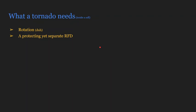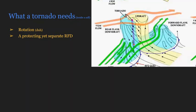So what does a tornado need specifically inside of a cell? Well, it needs this right here, this big picture right here. It needs rotation, duh, that's what a tornado is, it is rotating. And it needs a protecting yet separate RFD, or rear flank downdraft.